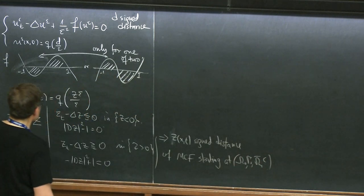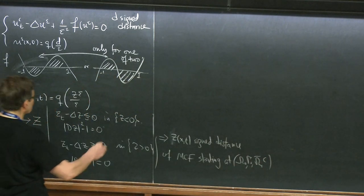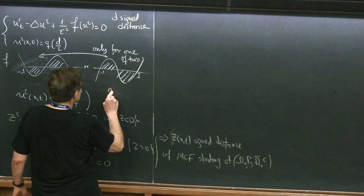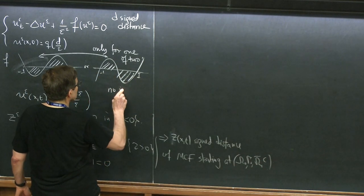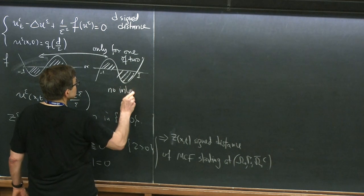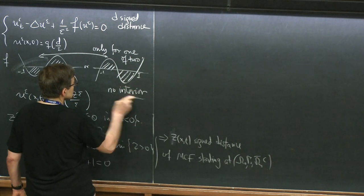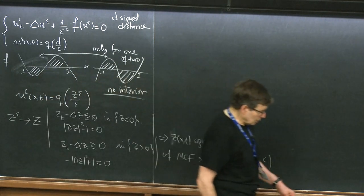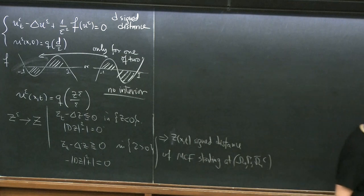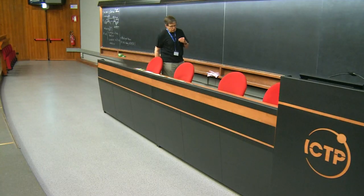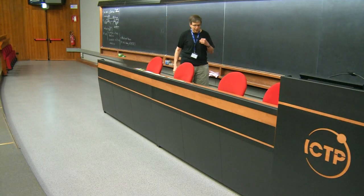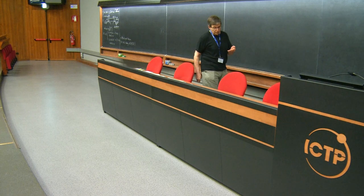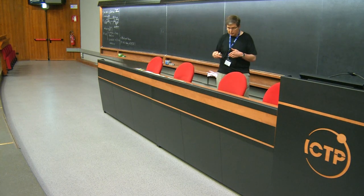I remarked, although I did not prove it, that this implied Z is the signed distance of the mean curvature flow starting at the initial interface Γ₀. And of course, when I state such theorems, I always make the assumption that there is no interior fattening.